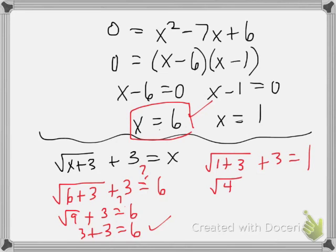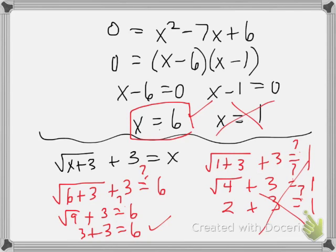So we get the square root of 4 plus 3. Does this equal 1? Well, square root of 4 is 2. I'm sure you guys love that. And 2 plus 3, does that equal 1? Well, heck no, it doesn't. So 1 is not a solution.